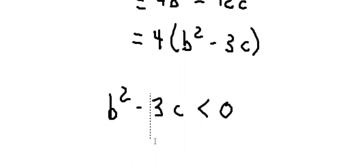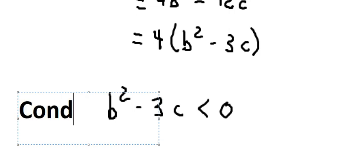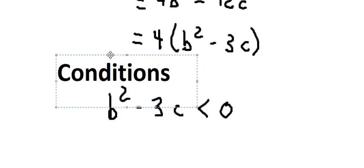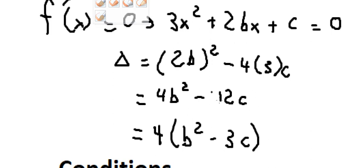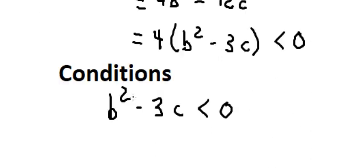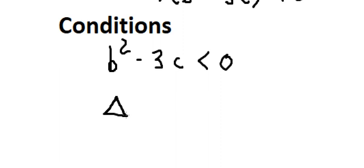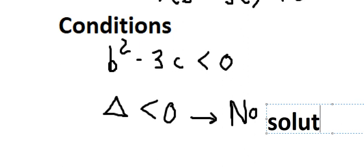Because b squared minus 3c is smaller than zero, so this one should be smaller than zero. That means the delta should be negative, so no solutions.